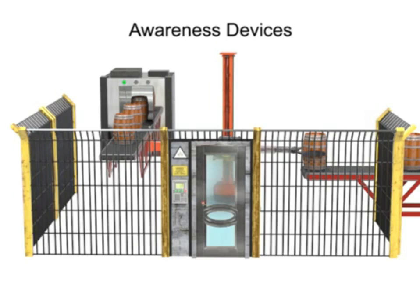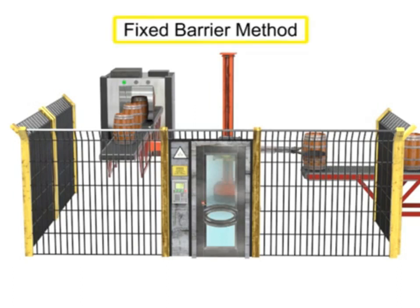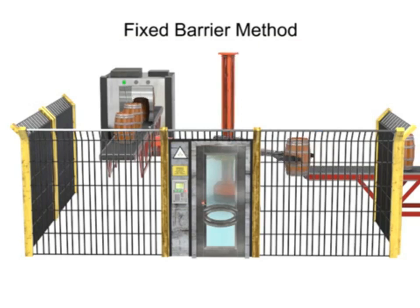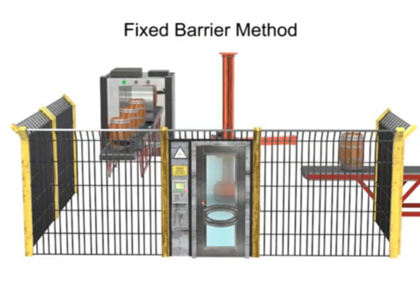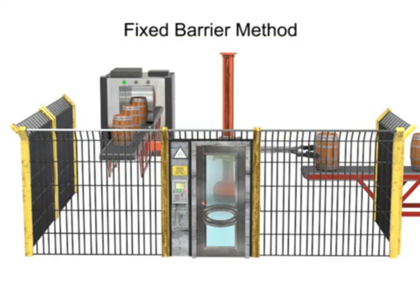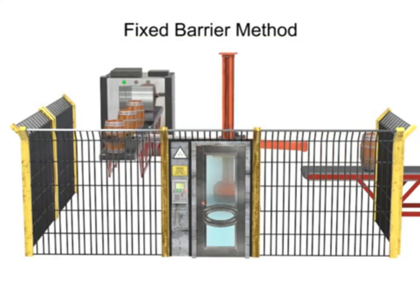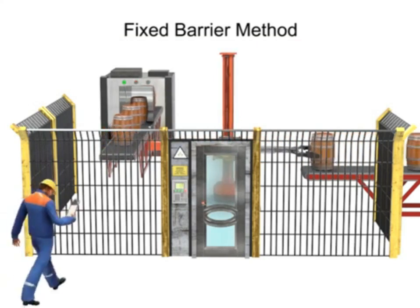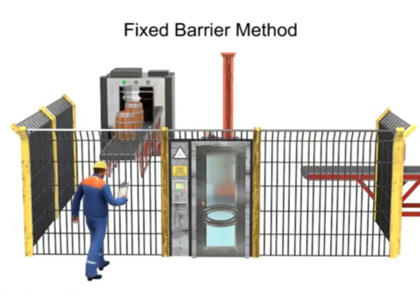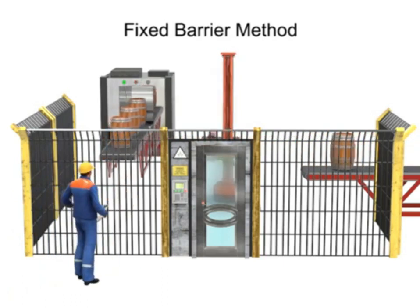Guarding methods are used to prevent unauthorized access to the work envelope. The simplest is known as the fixed barrier method, such as a fence or wall. The physical barrier is put around the work area and is configured in such a way that prevents access through, over, or around without a special key or access code.